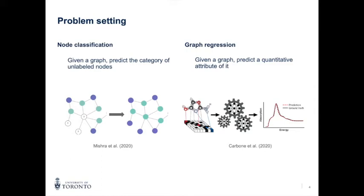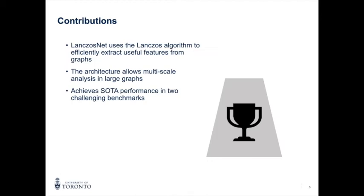In graph regression, the goal is to predict the attributes of a whole graph or part of a graph, and such attributes are usually numeric values. This problem is key for applications in science, especially in bioinformatics and chemistry, where you need to predict the properties of molecules based only on their structure.